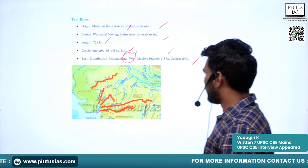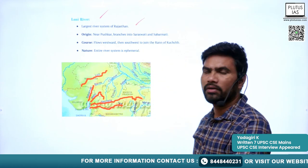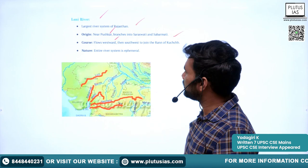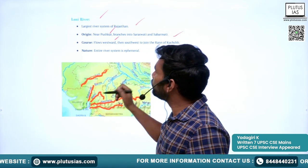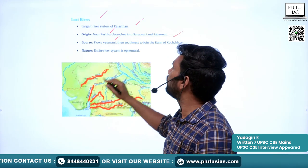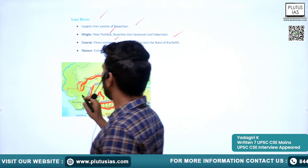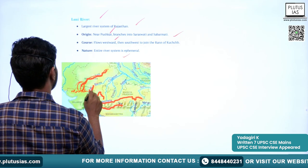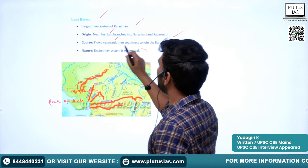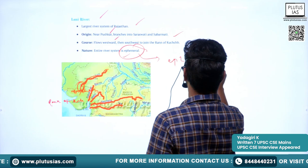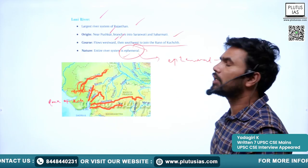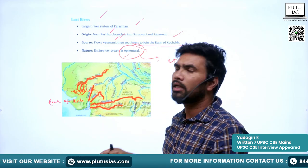The Luni River is the largest river system in Rajasthan, originating near Pushkar and branching into the Saraswati and Sabarmati rivers. It flows westward and southwest but does not reach the Arabian Sea — it dries up upon entering the marshy Rann of Kutch. Because of this, it is known as an ephemeral river — one that does not empty into a sea.